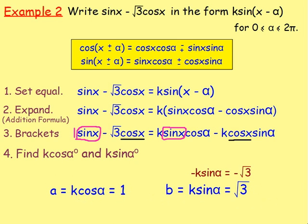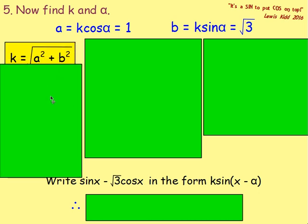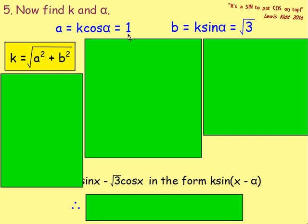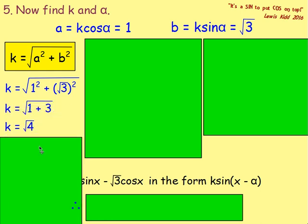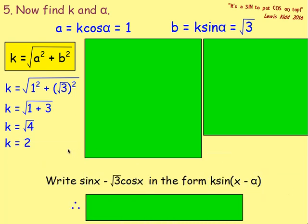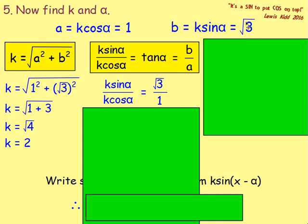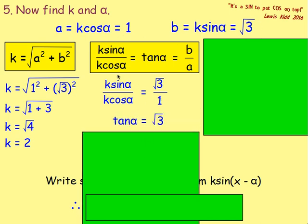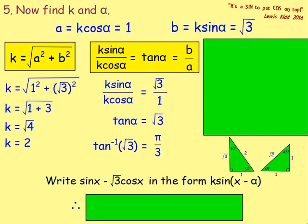So we have found a equals 1 and b equals root 3. To find k: square root of a squared plus b squared gives the square root of 1 squared plus root 3 squared, which is the square root of 1 plus 3, which is the square root of 4, which is 2. To find α: k sin α over k cos α gives root 3 over 1, which is root 3. K's cancel, sin over cos is tan, so tan α equals root 3. That is an exact value, giving α equals pi over 3, or 60 degrees.